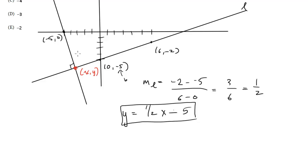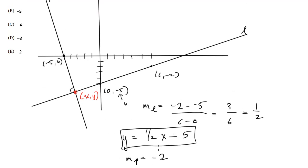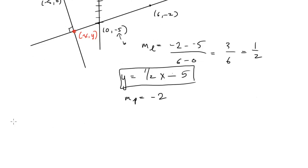Now what about line P? Well, I know its slope is the negative reciprocal of one half because they're perpendicular. So the slope of P is going to be negative 2. And now again, I can plug in negative 2 and this point negative 5, 0, either into y equals mx plus b or point slope.